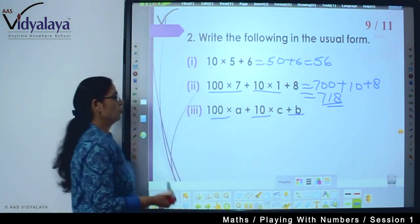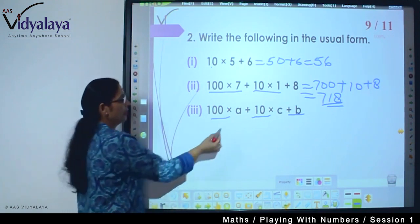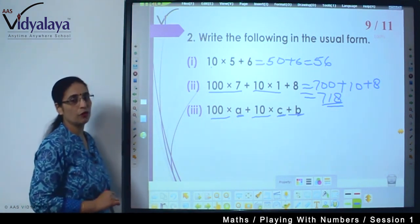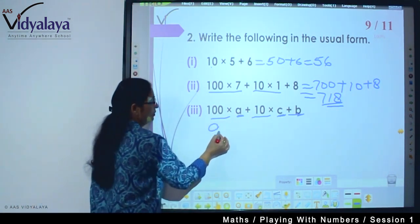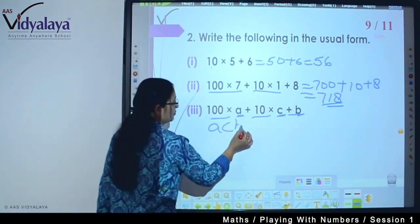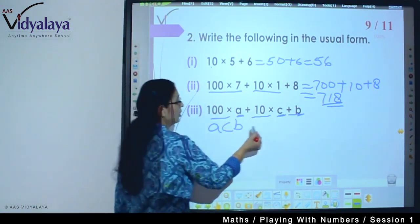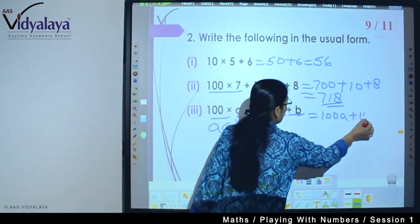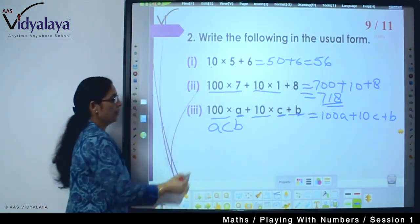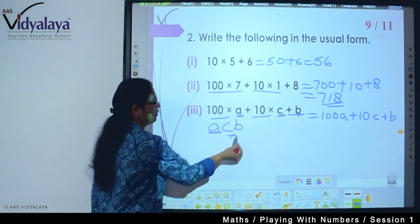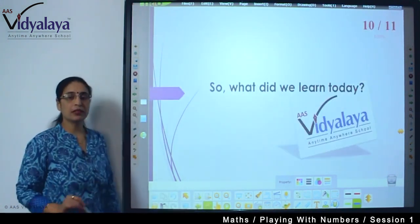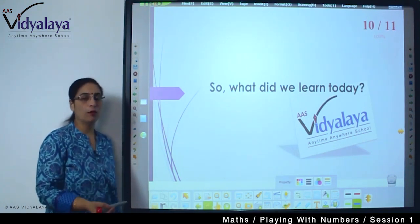Now next, think how we will do. These are variables A, C, B. So at 100th place which variable should we put? A. Then at 10th place? C. And at 1st place? B. Done? This number we can also write as 100A plus 10C plus B. So same, A has 100th place value, C has 10th place value and B has 1st place value.